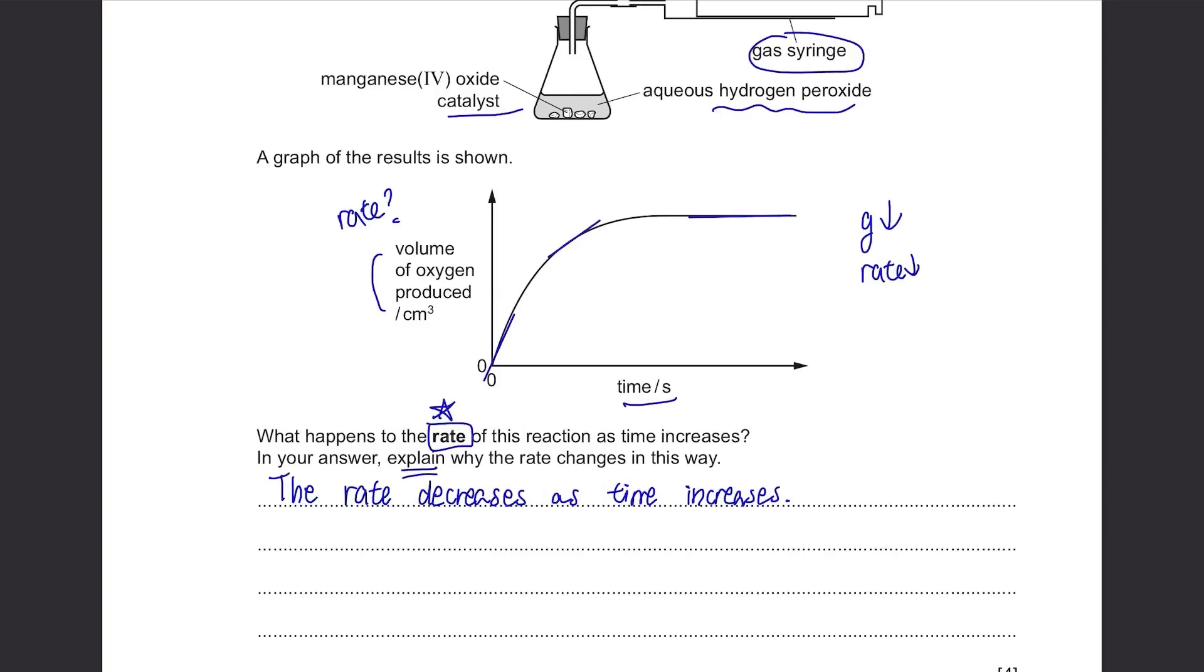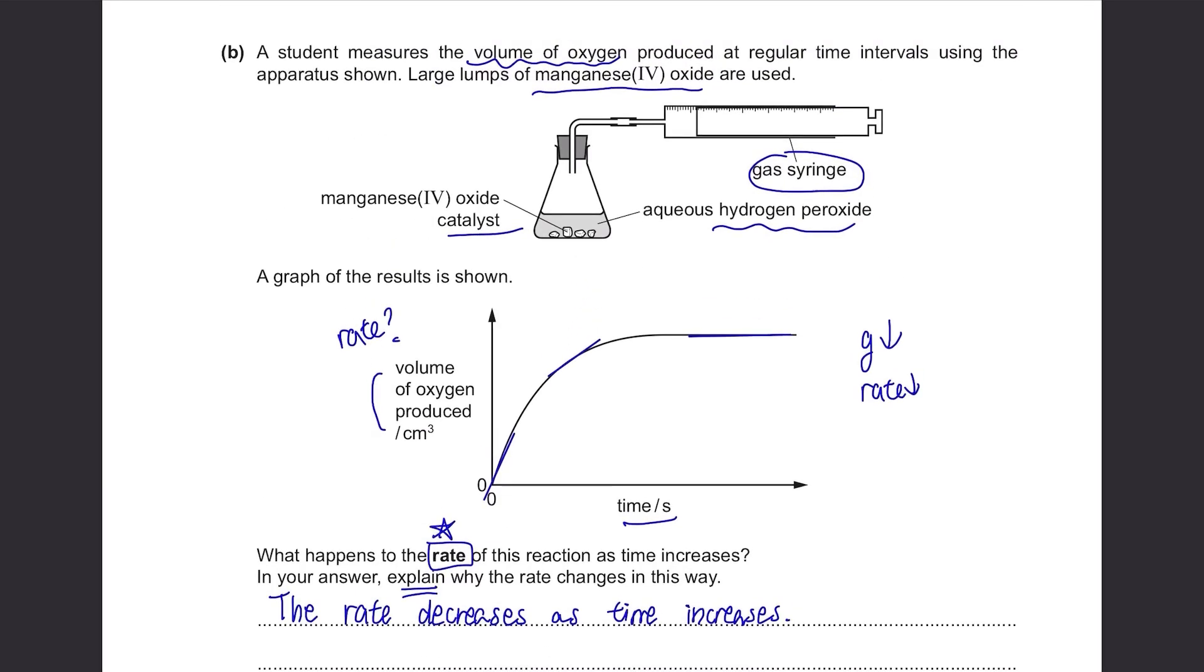Now we have to explain why the rate changes in this way. The reason behind this is pretty simple. It's because you're using up the reactants. The reactant is hydrogen peroxide in this case. As the reaction proceeds, there will be less particles present per unit volume because they're being used up. As a result, there will be fewer collisions per unit time. And in the end, the reaction stops completely because all hydrogen peroxide is used up.